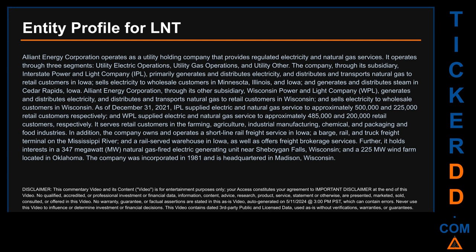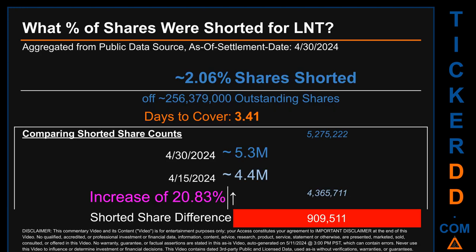WPL supplied electric and natural gas service to approximately 485,000 and 200,000 retail customers respectively. The company serves retail customers in farming, agriculture, industrial manufacturing, chemical and packaging, and food industries. It also owns a short-line rail freight service in Iowa, a barge, rail and truck freight terminal on the Mississippi River, and a rail-served warehouse in Iowa. It holds interests in a 347 MW natural gas-fired electric generating unit near Sheboygan Falls, Wisconsin, and a 225 MW wind farm in Oklahoma. The company was incorporated in 1981 and is headquartered in Madison, Wisconsin.